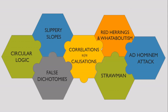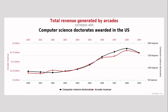The fourth fallacy is correlations not equating to causations. For example, a chart might show that total revenue generated by game arcades correlates with computer science doctorates awarded in the US. Just because both of these things have the same trajectory on the chart does not mean that one caused the other or had any effect on the other. Correlation does not equate to causation.